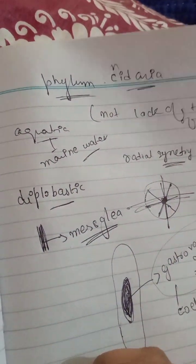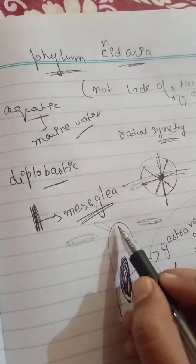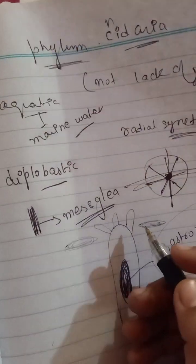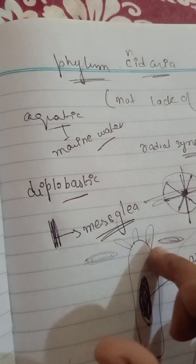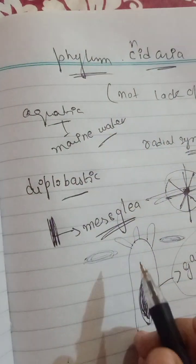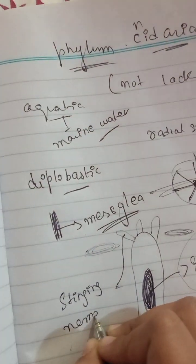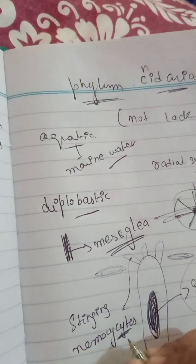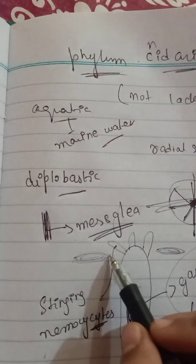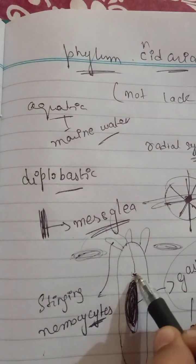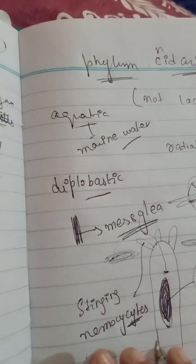Cnidarians have tentacles in their body. Tentacles contain stinging cells. They use the tentacles to attack prey, and the prey is moved inside the gastro-vascular cavity. For paralyzing the prey, they secrete a chemical. The stinging cells inside the tentacles are called nematocysts. That is why they are called cnidarians.